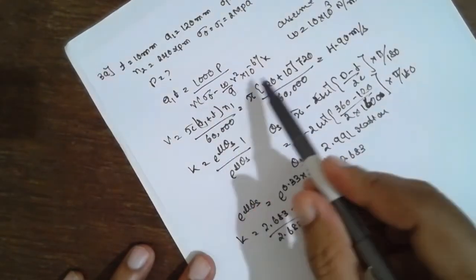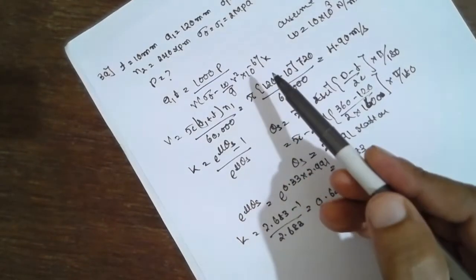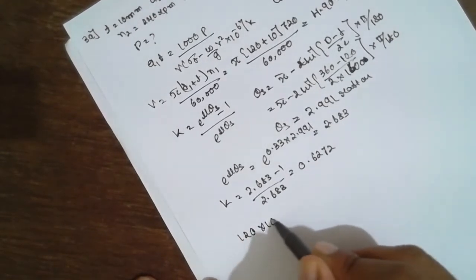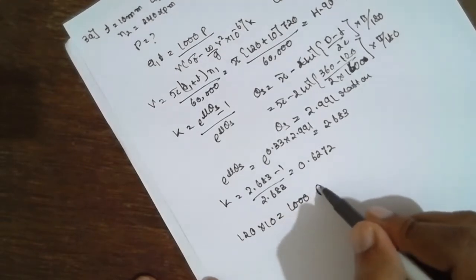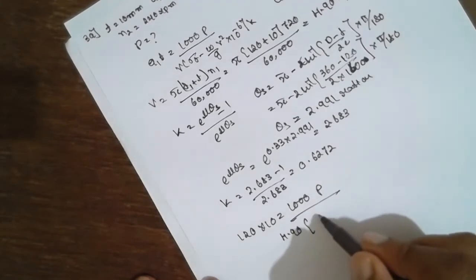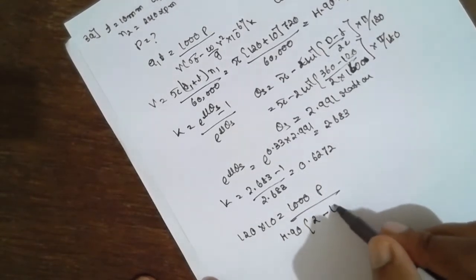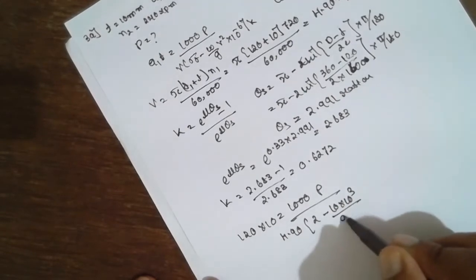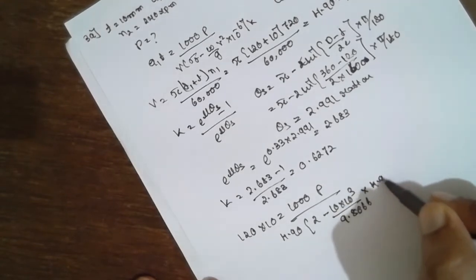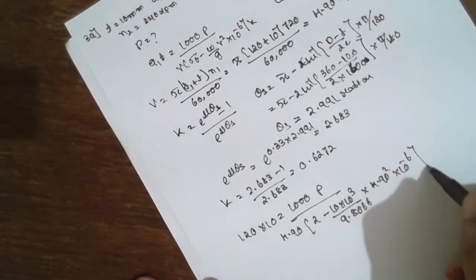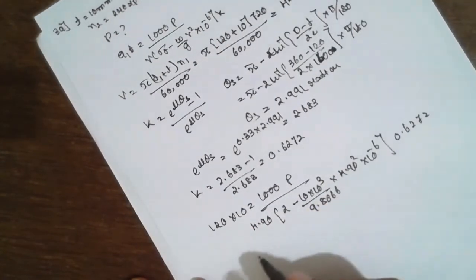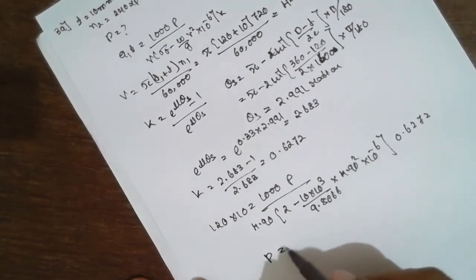Now substitute here, everything is given. A is 120 × 10 = 1000 × P. We have to find out P. Velocity is already known, 4.90. Sigma_d = 2 minus (W × 10 × 10³)/(g × 9.8066). Velocity is again 4.90 whole square × 10^-6. K value will be 0.6272. If you calculate, the answer will be P = 7.28 kilowatt.